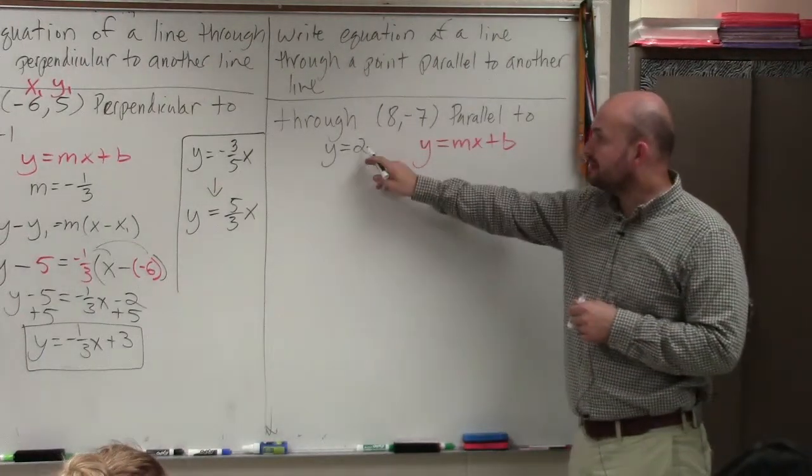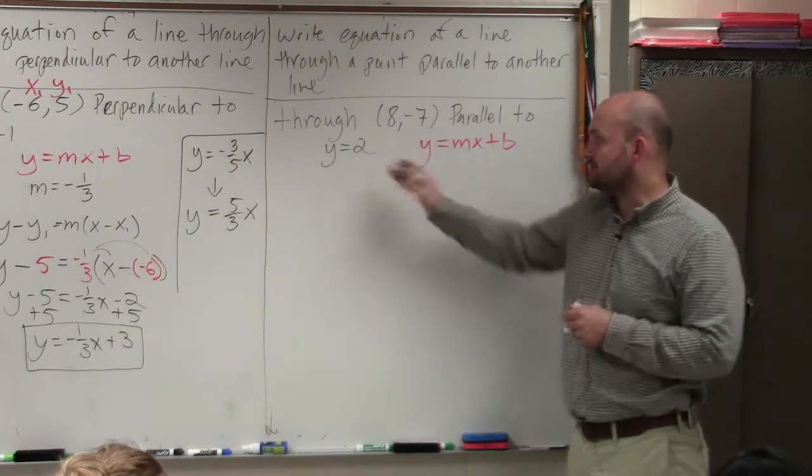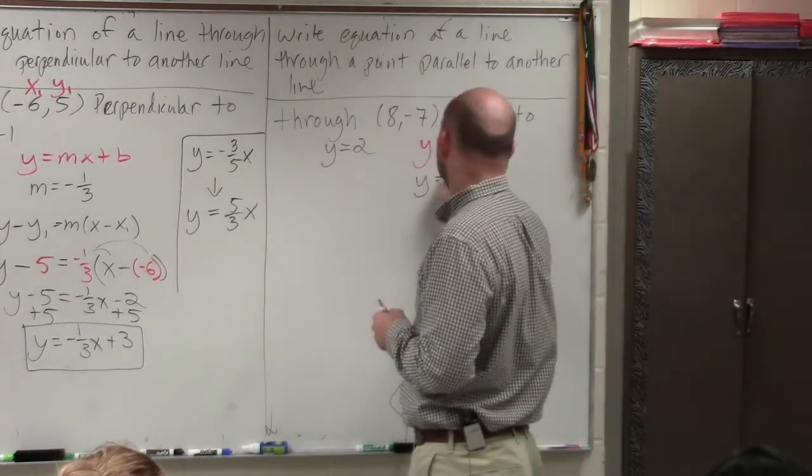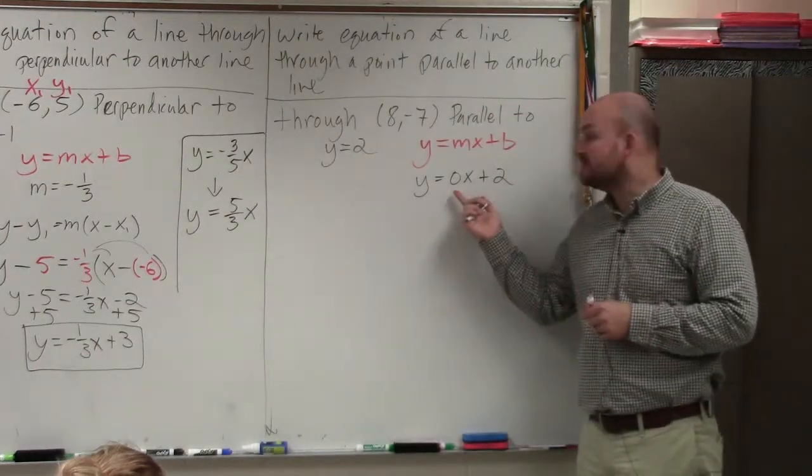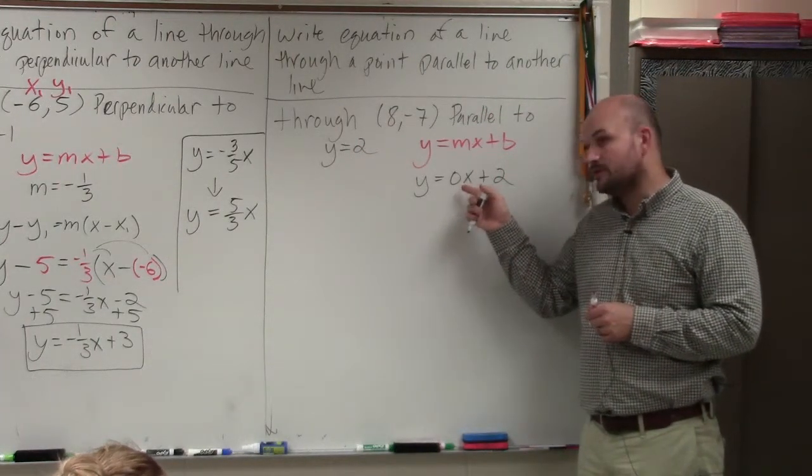But remember, when we have y equals 2, we can rewrite this as y equals 0x plus 2. So in reality, what you can do is see that 0 is going to be your slope.